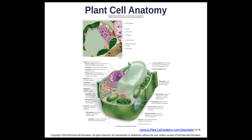A plant cell has many of the same organelles: nucleus, nucleolus, ribosomes, endoplasmic reticulum, Golgi bodies, and mitochondria. But it also has a large vacuole — a big storage place for water — and green chloroplasts that have pigments to capture sunlight so the plant cell can make its own food. We'll go through all of these parts as we continue.